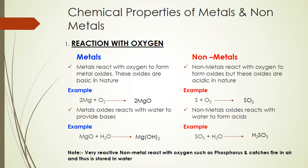Now for chemical properties: when metals react with oxygen, they form metal oxides, which are basic in nature. For example, two molecules of magnesium react with oxygen to produce two molecules of magnesium oxide. When these metal oxides react with water, they form bases — for example, magnesium oxide reacts with water to give magnesium hydroxide.